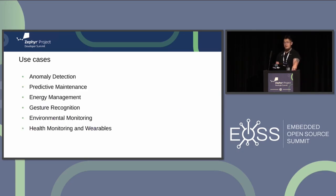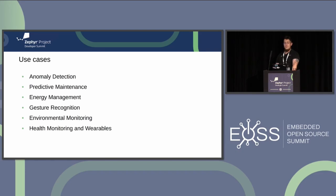For the use cases: anomaly detection — analyzing sensor data in real-time and detecting anomalies or abnormal patterns, for example in an industrial setting. Predictive maintenance — checking if there are patterns matching known issues that can happen with machinery. Energy management — using sensor data to minimize energy wastage based on different device behavior under different energy conditions. Gesture recognition — enabling hands-free control of devices and triggering specific actions. Environmental monitoring — processing data regarding air quality, noise levels and humidity directly on the device without sending it to the cloud. And health monitoring — early detection of symptoms in patients, for example.